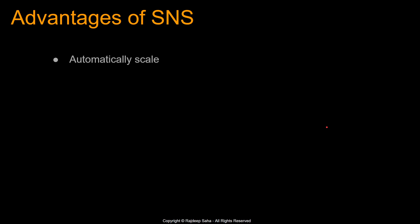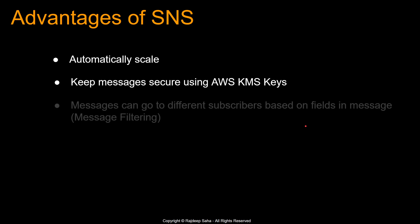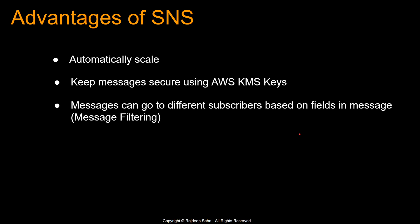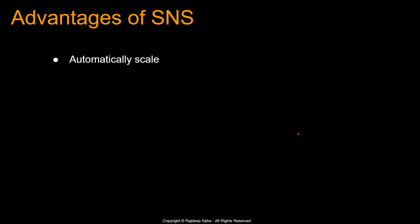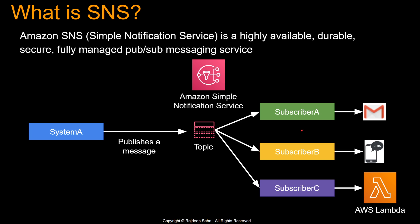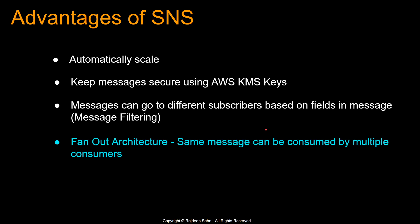What are some of the advantages of SNS? It scales automatically — if the number of messages increases, SNS will automatically scale up under the hood. It can keep messages secure using AWS KMS keys. Messages can go to different subscribers based on fields in the message. If you want to send specific messages to Subscriber A, B, or C based on particular fields inside the message, you can do that using SNS message filtering. And the biggest advantage of SNS is you can create fan-out architectures, where the same message can be consumed by multiple consumers.